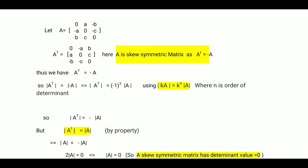So we have A transpose equal to minus A. Now take the determinant value on both sides: determinant of A transpose will be equal to determinant of minus A. We have a property in determinants that determinant of kA equals k to the power n times determinant A, where n is the order of the determinant. Here we have an order 3 determinant.